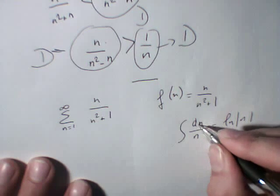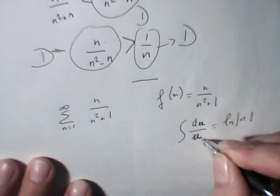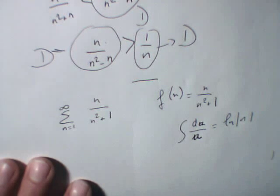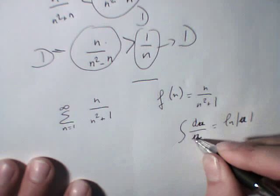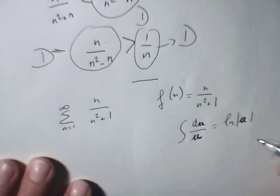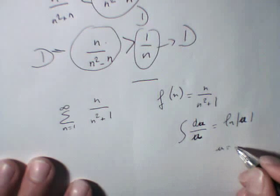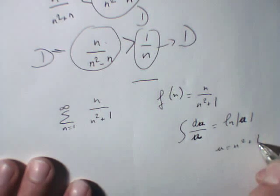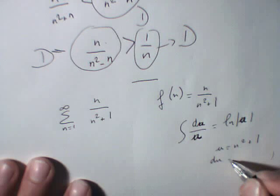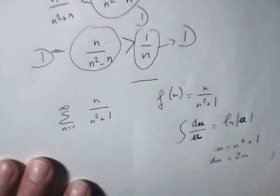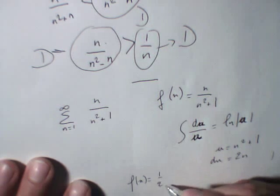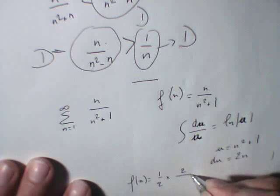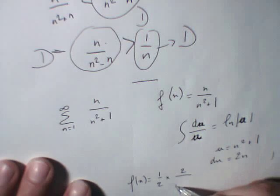Let's take u. du divided by u to make it clearer. du divided by u is ln of u. In this case, u equals n squared plus 1. And du is going to be 2n. So we've got n here.